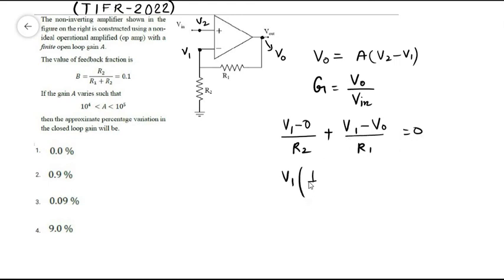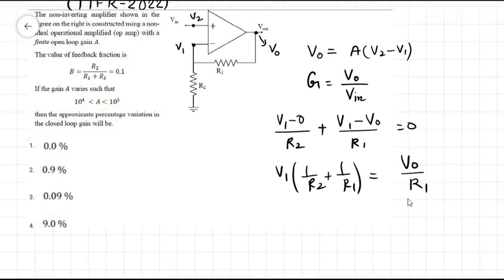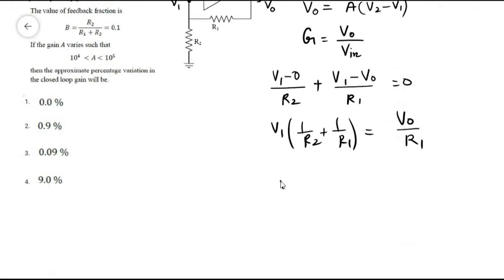So we will get v1(1/R2 + 1/R1) = v_o/R1. Therefore v1 equals v_o times R2/(R1 + R2), and that is given to be 0.1, so this will be 0.1 times v_o.